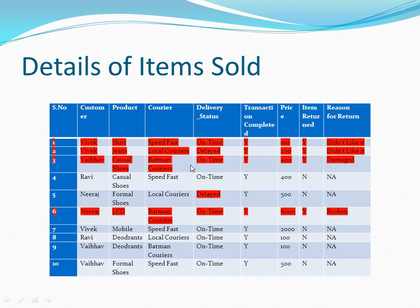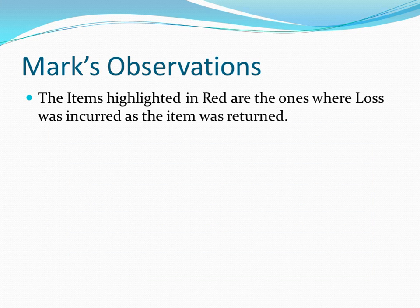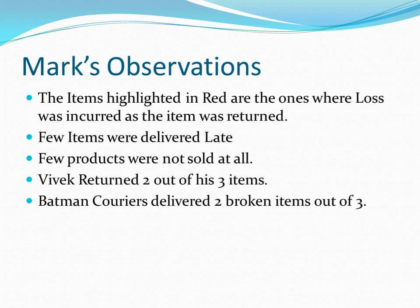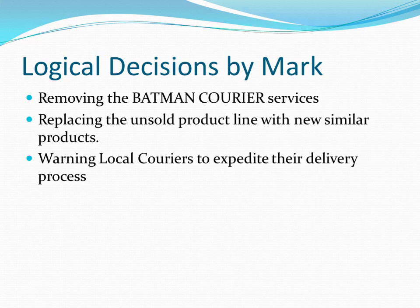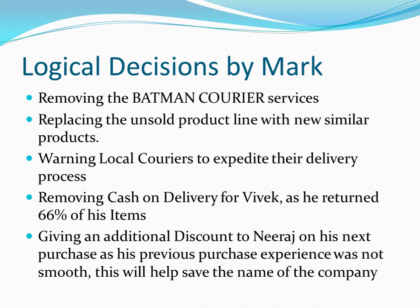Based on this, we can draw logical conclusions: few items were delivered late, few products were not sold at all, Vivek returned two of his three items, and Batman Couriers delivered two broken items out of three. Mark can therefore remove Batman Couriers, replace unsold product lines with similar products, warn local couriers to expedite delivery, remove cash on delivery for Vivek since he returns most items, and give an additional discount to Neeraj on his next purchase since his previous experience was poor — this will protect the company's reputation.